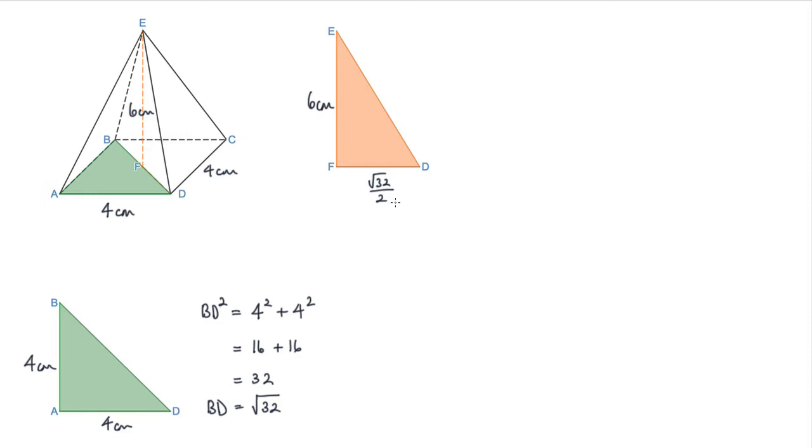Now I can use Pythagoras to find the length DE. DE squared will be equal to this length squared. So that's 6 squared plus DF squared. We've got the square root of 32 divided by 2, and that's all squared.